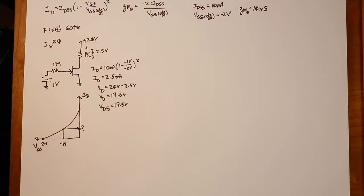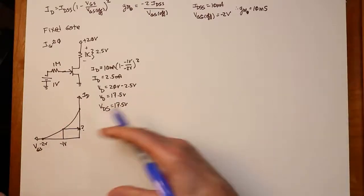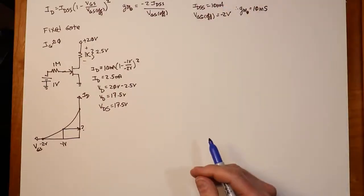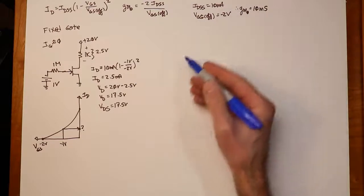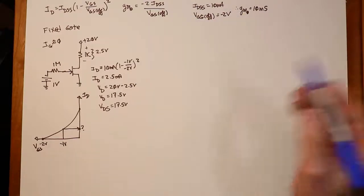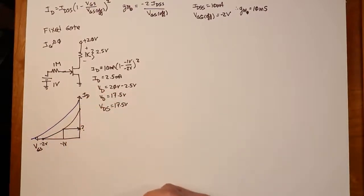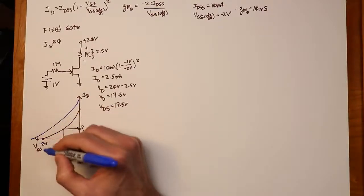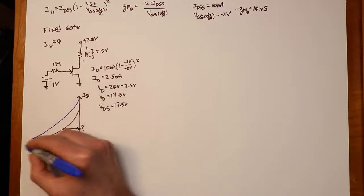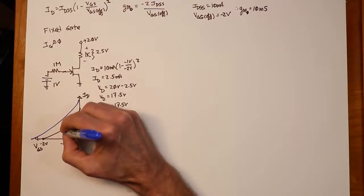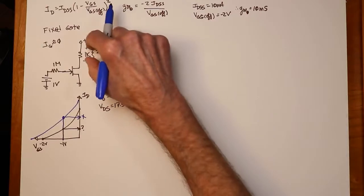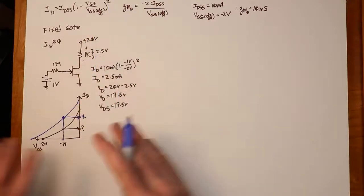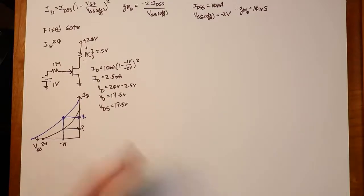The problem with fixed gate bias is device variation — just like beta variation in bipolar transistors, JFETs have variation in IDSS and VGSoff, and it can be quite large. For small signal devices, VGSoff might range from minus 2 to minus 8 volts and current from 2 to 20 milliamps. With a fixed gate of minus 1 volt, a different transistor with a higher IDSS will produce a much larger drain current, and VDS shrinks significantly. Very simple, but not very stable.